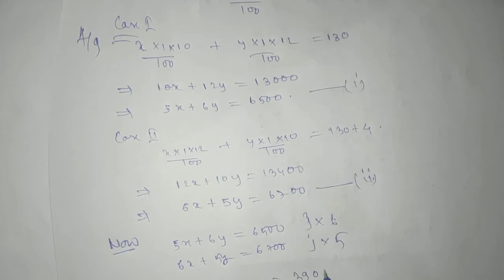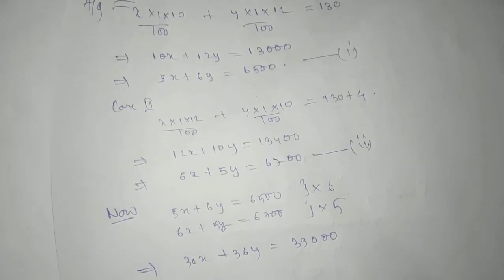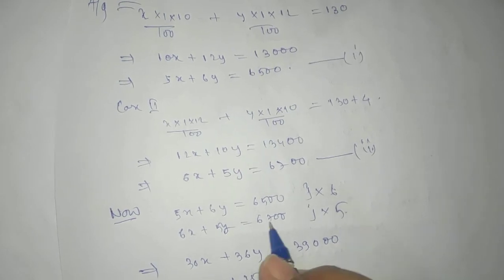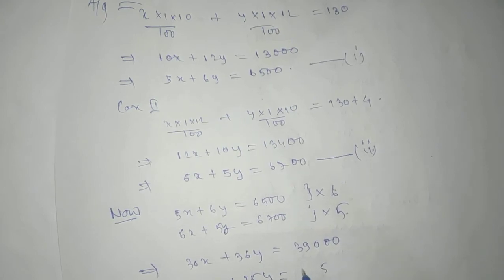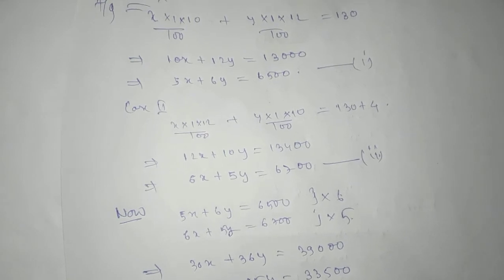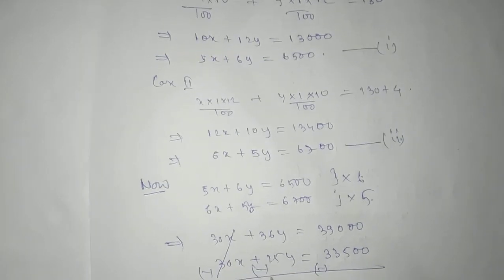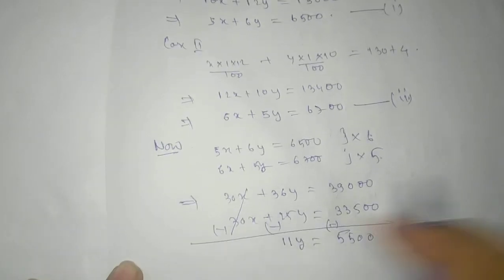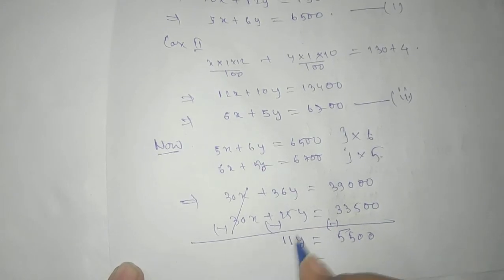And this will give you 30x + 25y = 33500. Subtract: we'll get 11y = 5500.